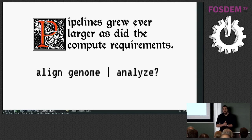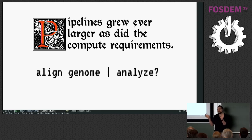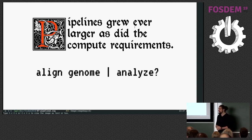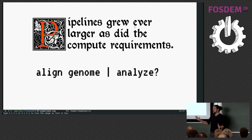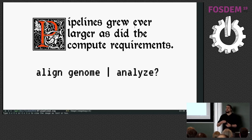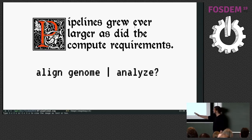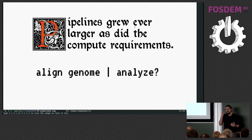Pipelines grew ever larger, as did the compute requirements. No longer was it sufficient to have a process and another process that communicate with one another. When researchers of the life sciences understood the value of computing for biology, they tried to scale this very simple concept to the genome scale — terabytes of data, lots of processes, lots of data, to produce a final answer, maybe 42. The process is never as simple as that. We need a new spin on this idea of processes.